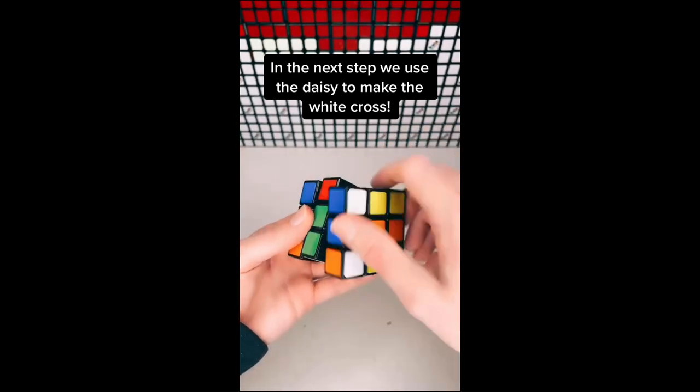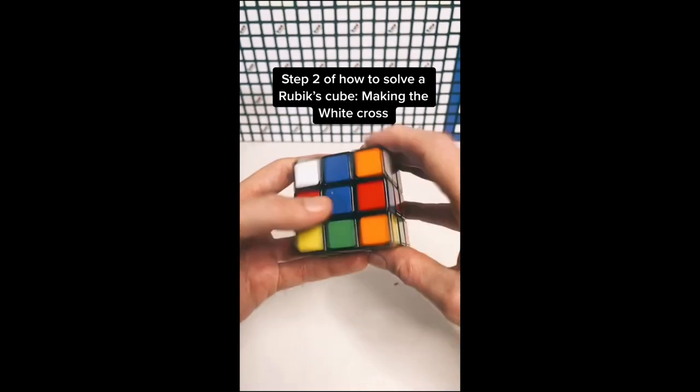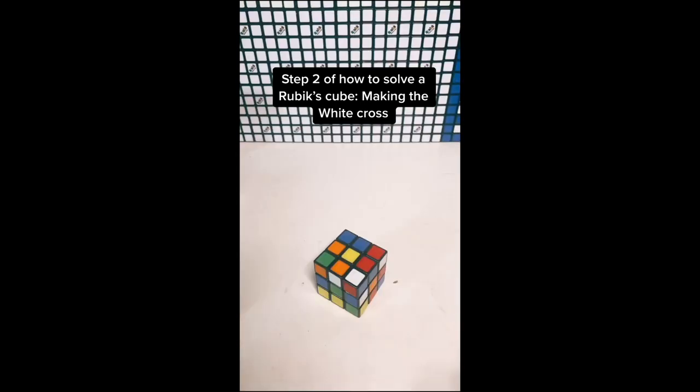We use the daisy to make the white cross. Step 2 of how to solve a Rubik's Cube: Making the white cross.